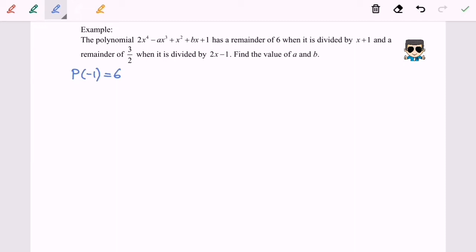And a remainder of 3 over 2 when it is divided by 2x minus 1, so here we will have another information: P(1/2) equals 3 over 2.